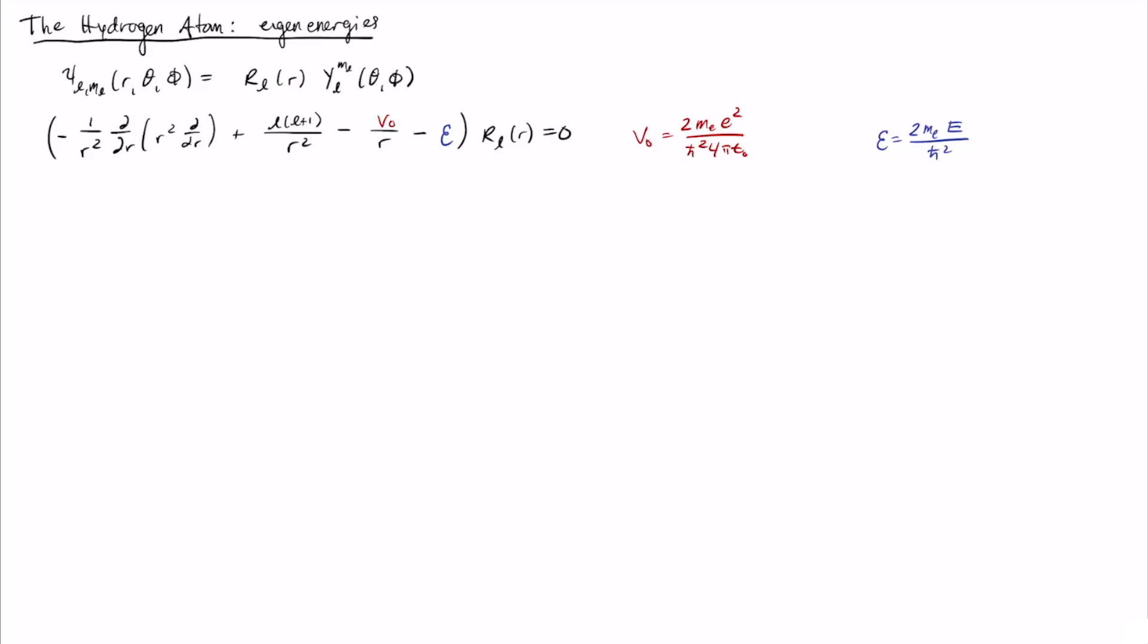And the R sub Ls will be solutions to this radial equation down here. So this is the radial equation where you have what looks like a kinetic energy term, and then an effective potential that includes the Coulomb interaction, and then something that looks like a 1 over R squared that depends on the angular momentum part. And then these are some simplified constants that are shown over to the right.